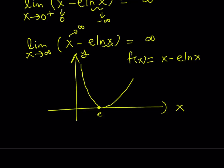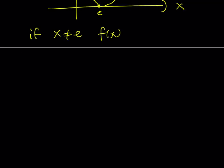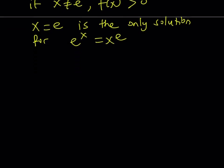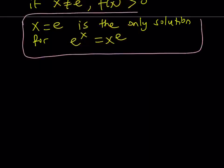We have only one solution to this equation. If x does not equal e, then f of x is always positive, which means it can never be zero. So x equals e is the only solution for the equation e to the power x equals x to the power e. Thank you for watching — I hope you enjoyed it. Please comment, like, and subscribe. I'll see you tomorrow with another video. Until then, be safe, take care, and bye bye.